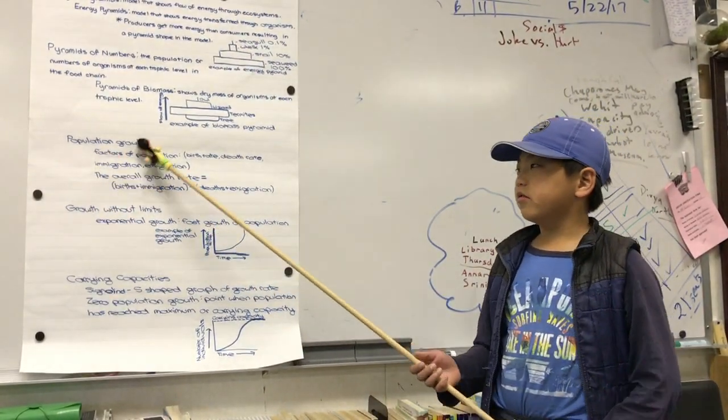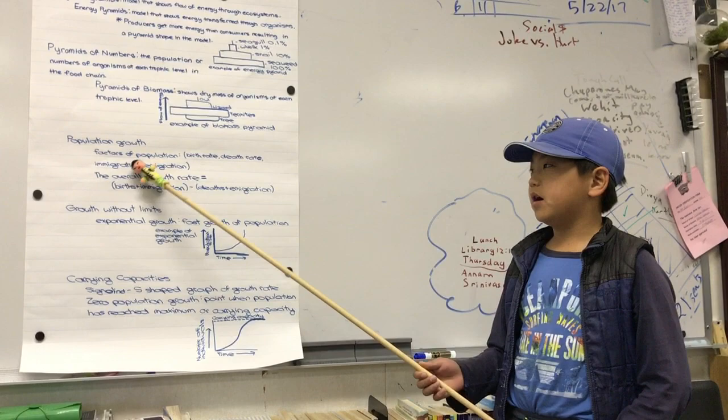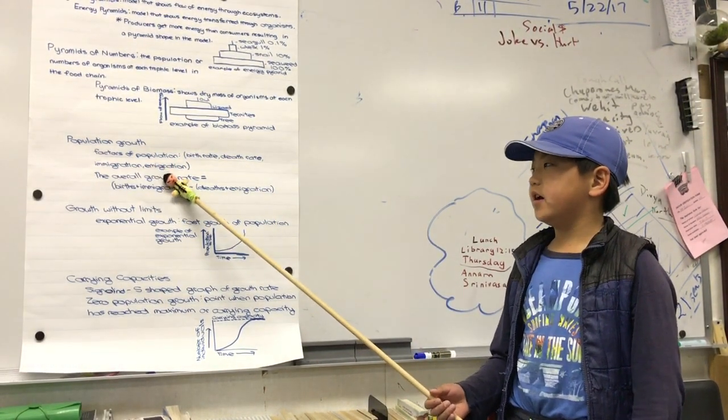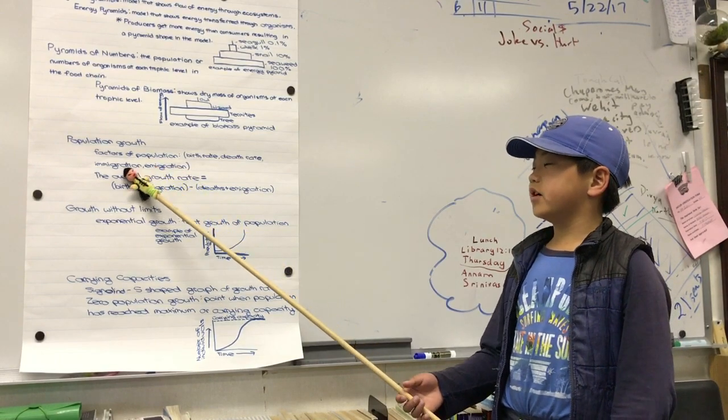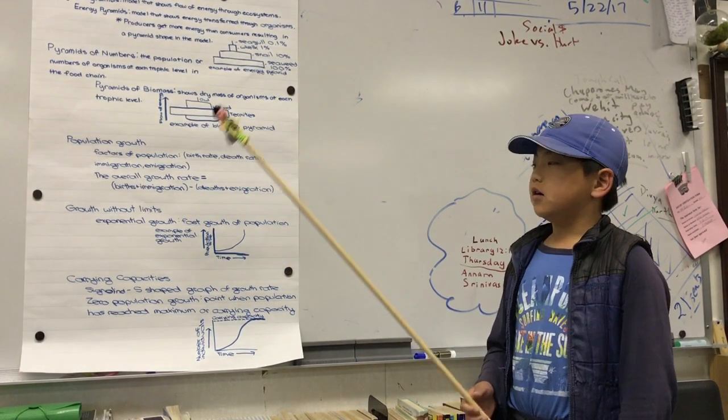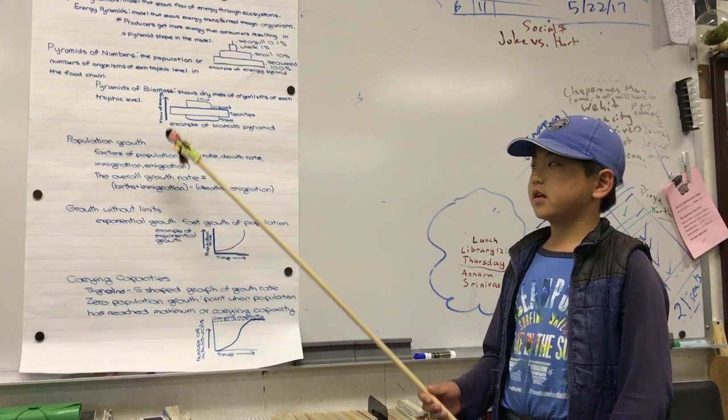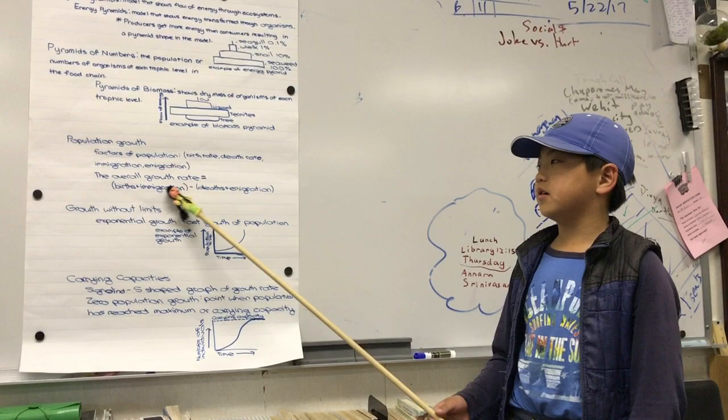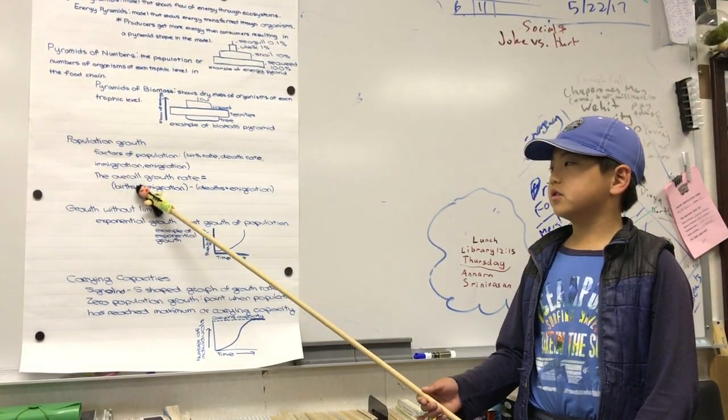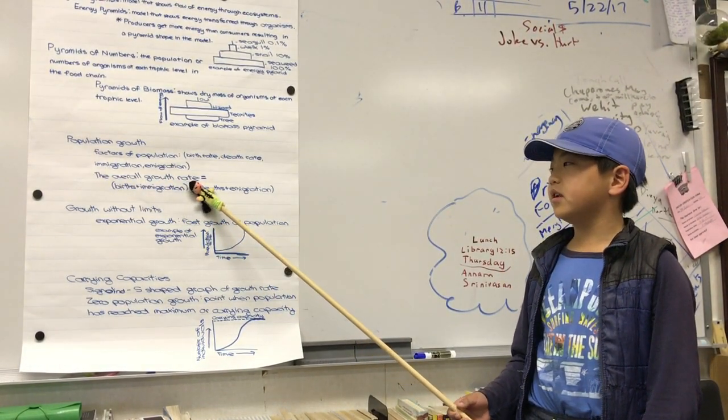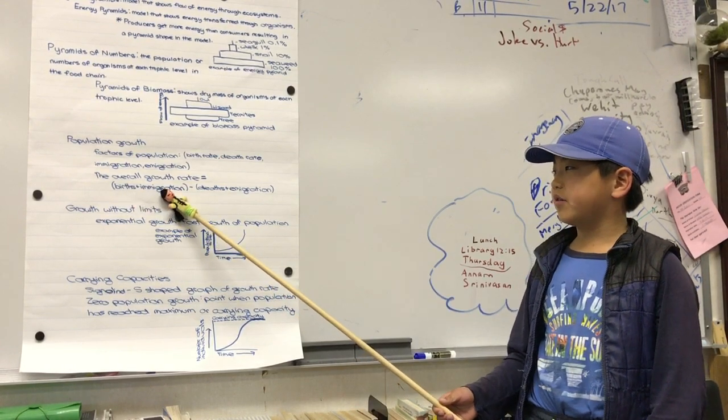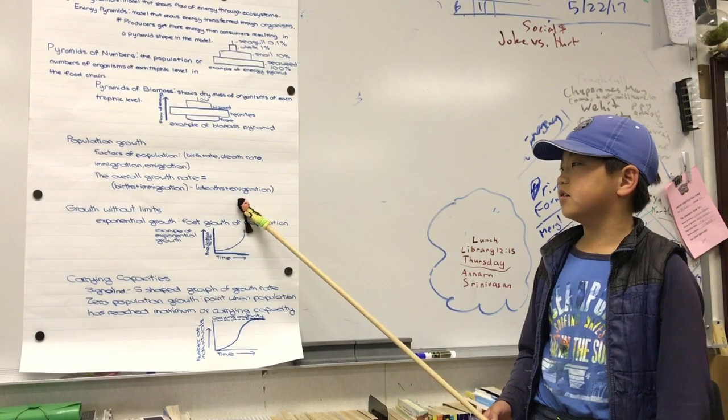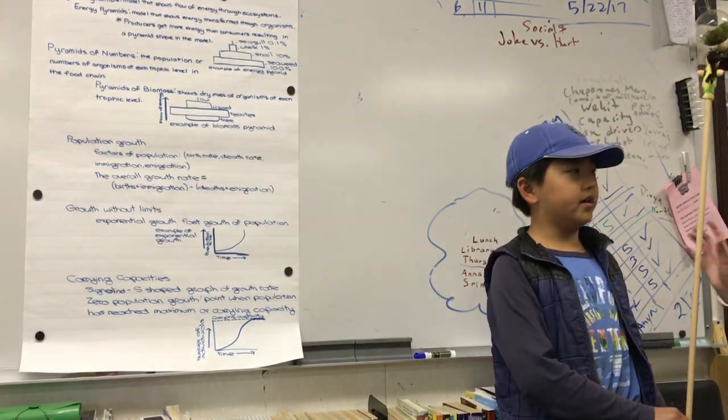There's also population growth, and the factors that affect population growth are birth rate, death rate, immigration, and emigration. Immigration is the amount of organisms that come to an area, and emigration is how many organisms leave an area. To calculate the overall growth rate, you do birth rate plus immigration minus death rate plus emigration, which equals the overall growth rate.